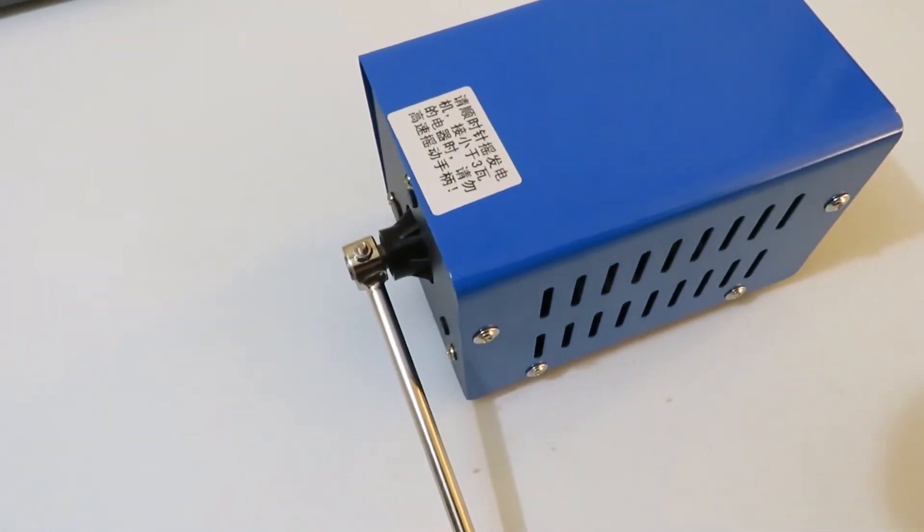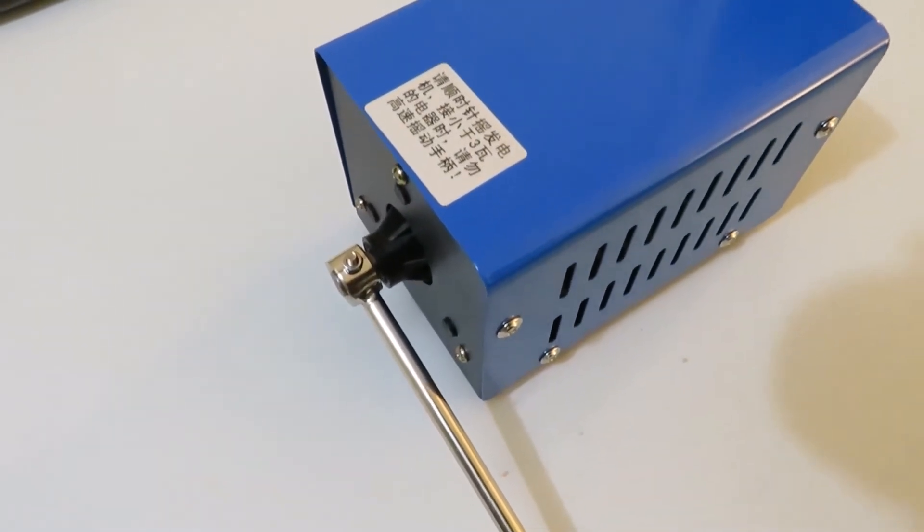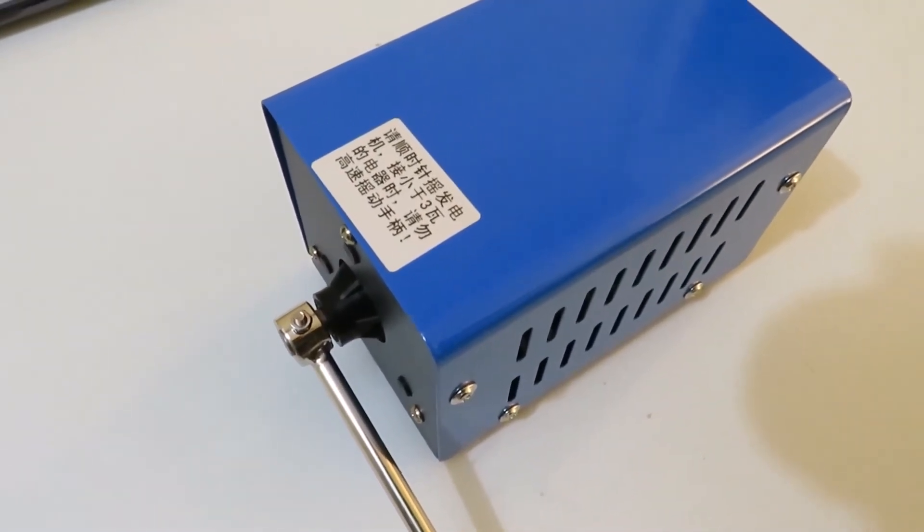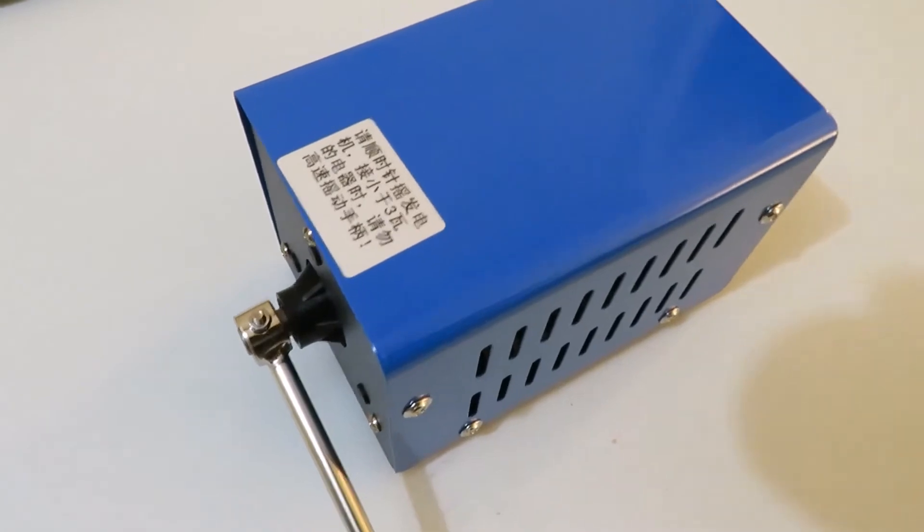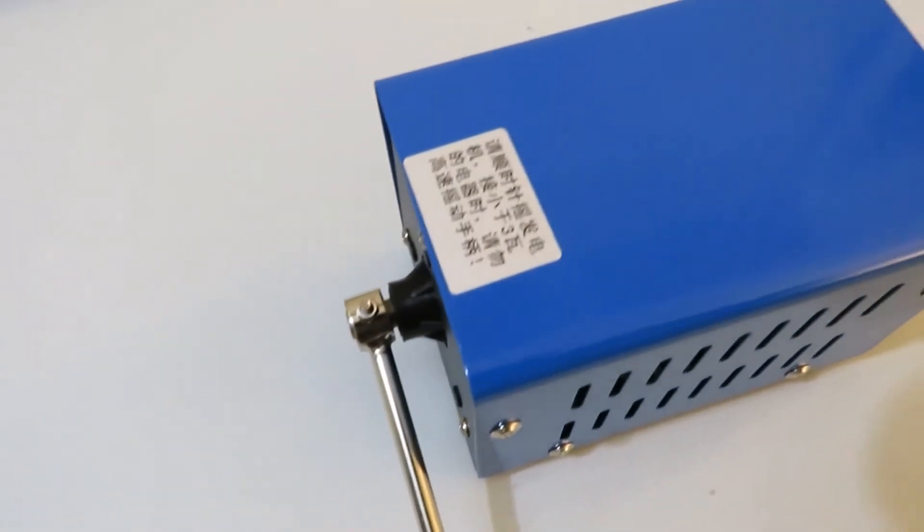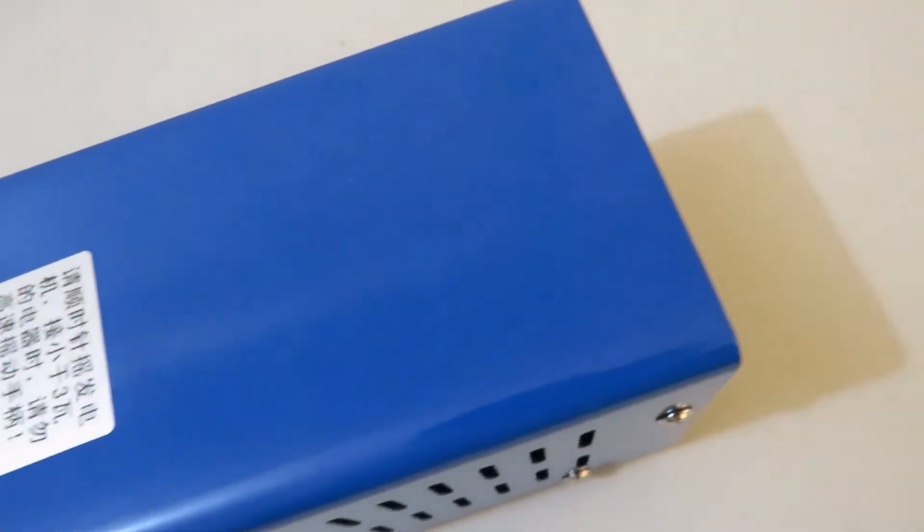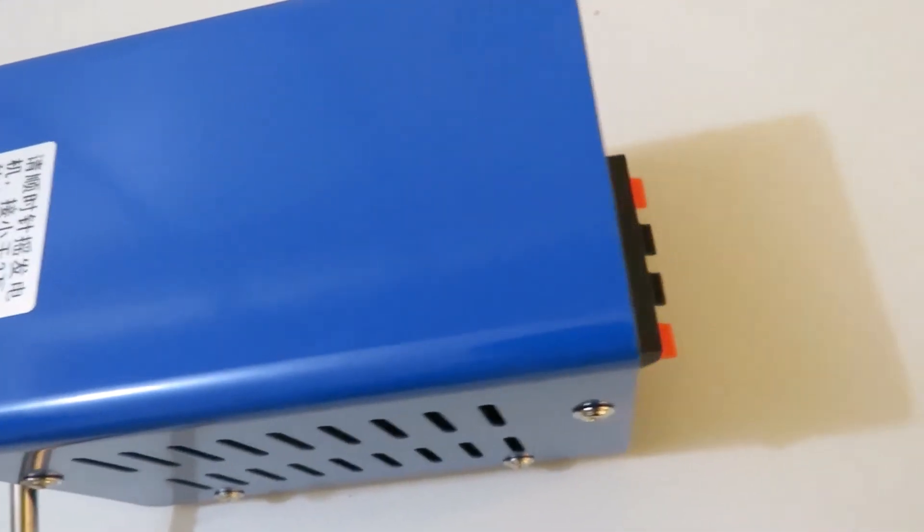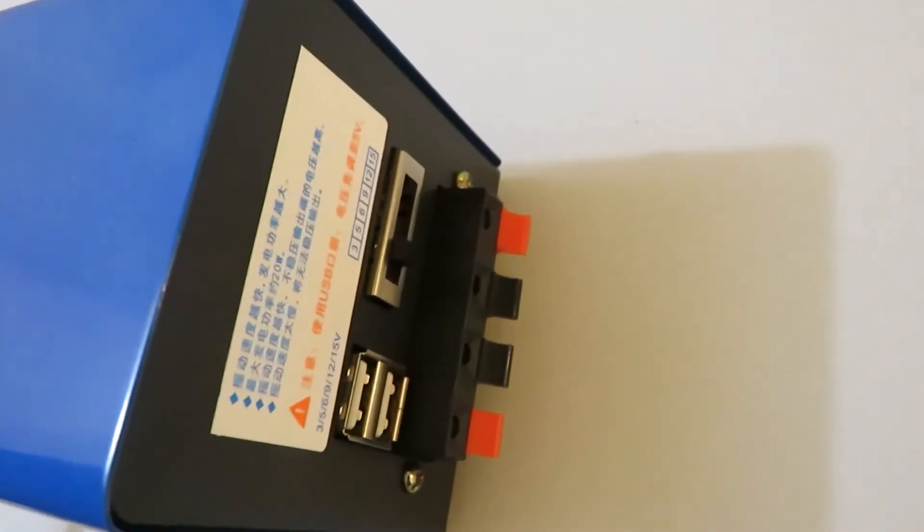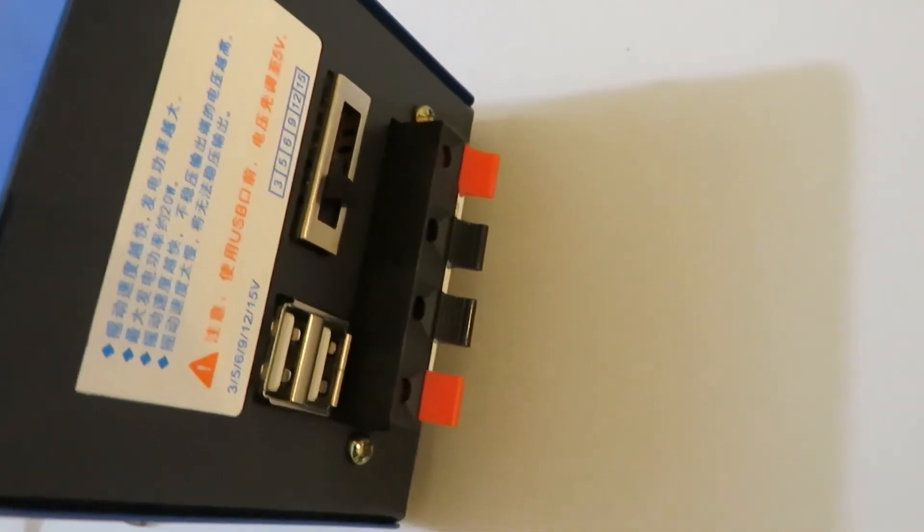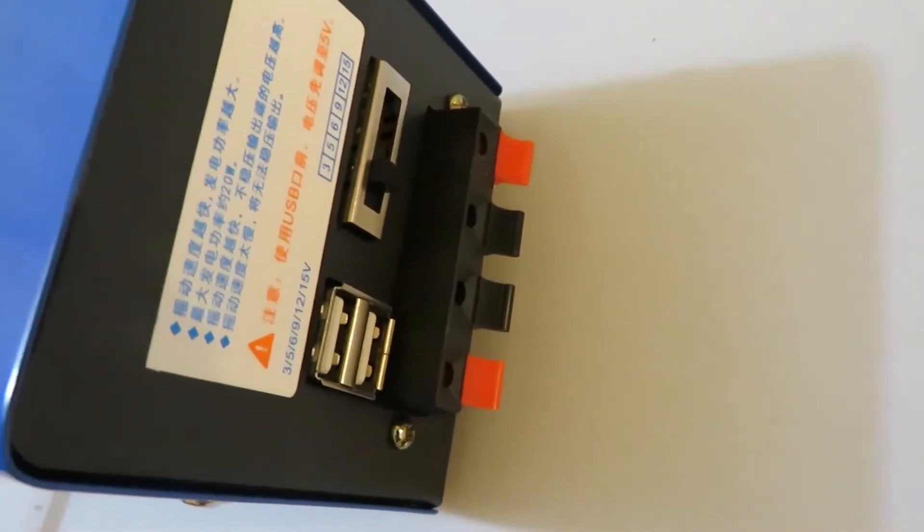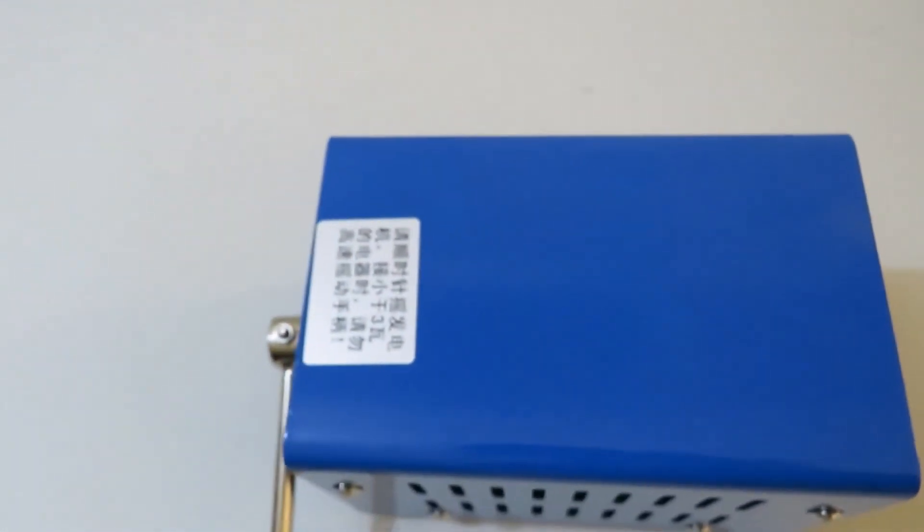On the back side there is only the handle for cranking the generator. As you can see, the labels on this device are all written in Chinese, but no problem - you can easily take a photo with your mobile phone and Google Translate will translate for you. On the front side you can see there are two USB connectors, one sliding switch, and four terminals.